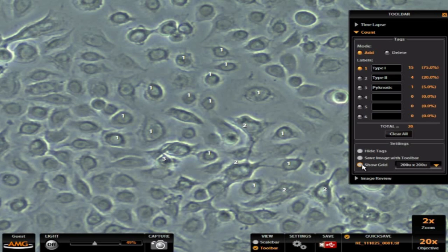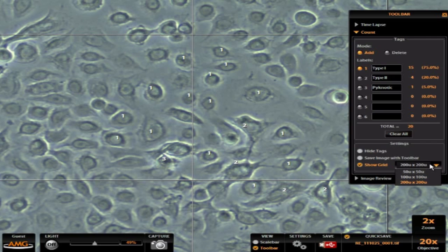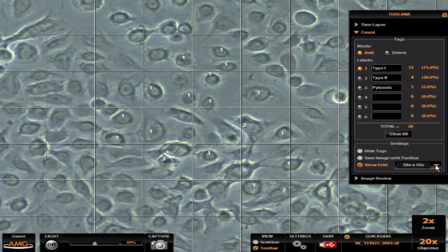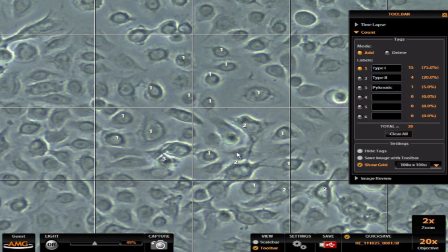Another thing that's handy is to turn on a grid. So this option that says show grid, I can turn this on. I can change the size of the grid and make it smaller or larger, count a certain number of cells within each grid and know how many cells I have per unit area.